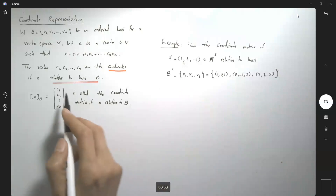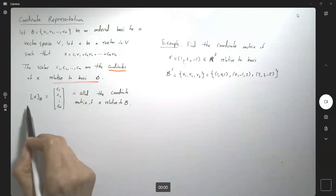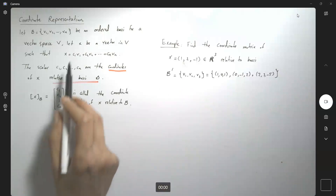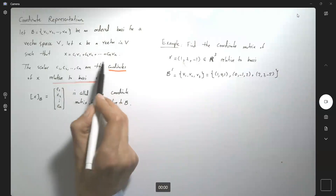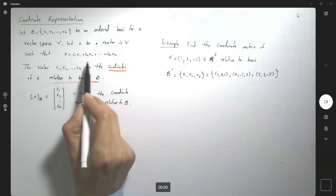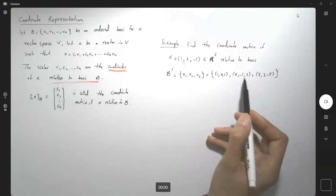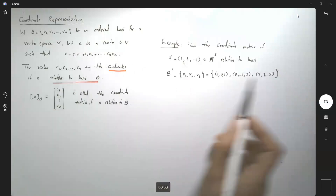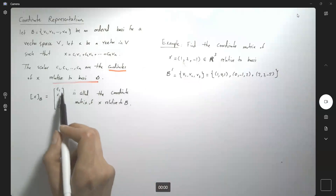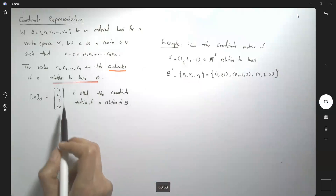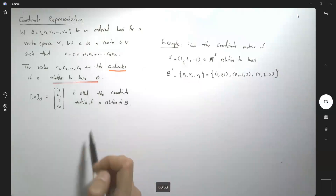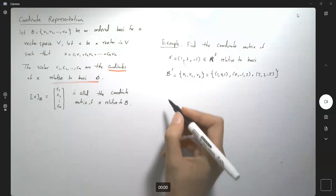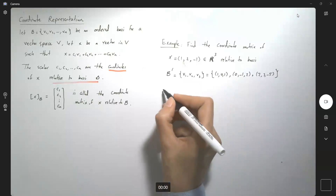So we are trying to find this coordinate matrix. We need to write x as a linear combination of these basis vectors and then find the coefficients. Those coefficients are the coordinates. So let's start.